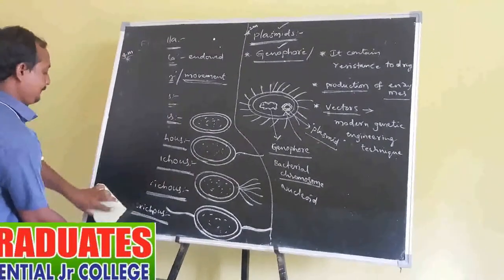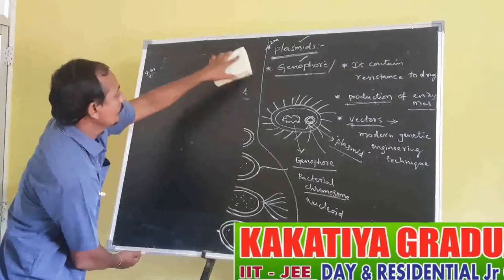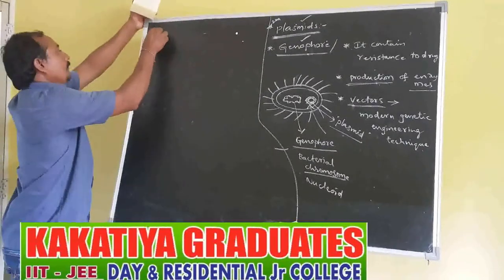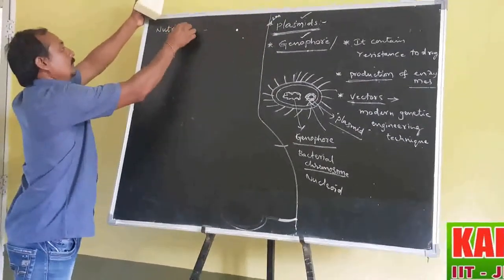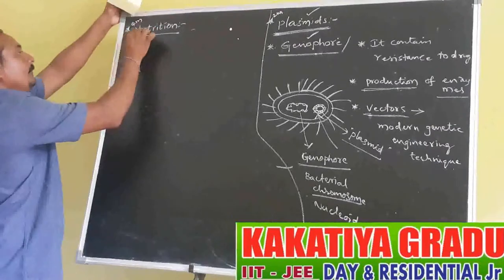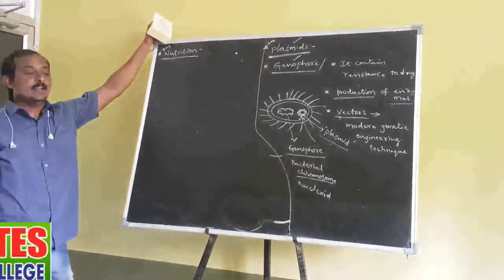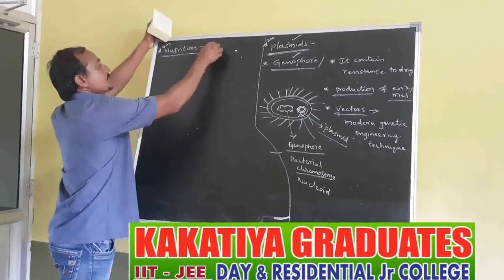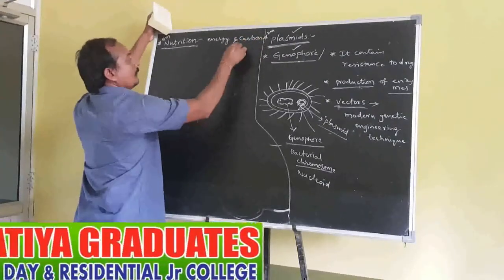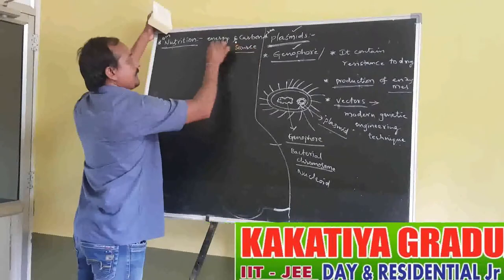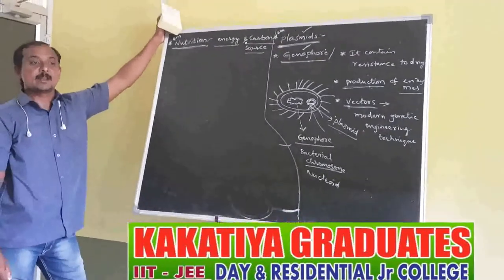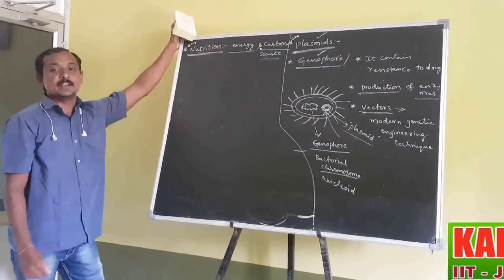The next topic is Bacterial Nutrition — another four marks important question. How are bacteria classified on the basis of energy and carbon source? Based on the energy source and carbon source, Bacterial Nutrition is divided into four types.